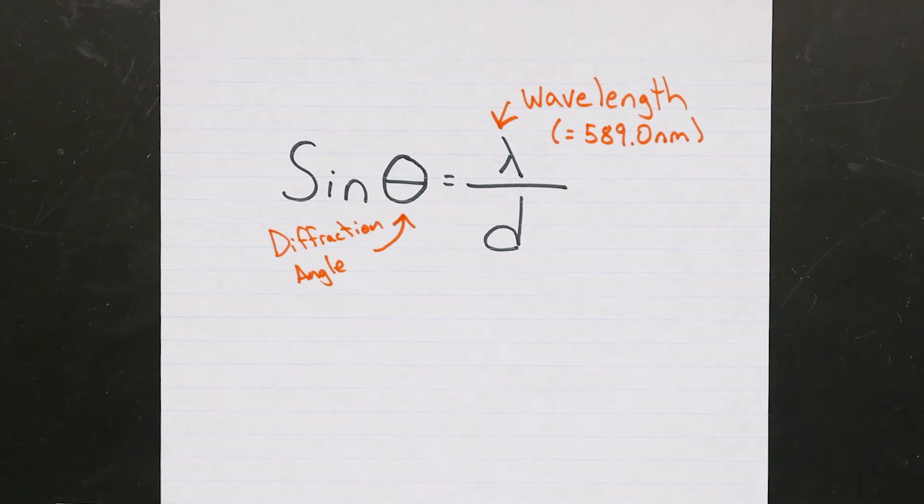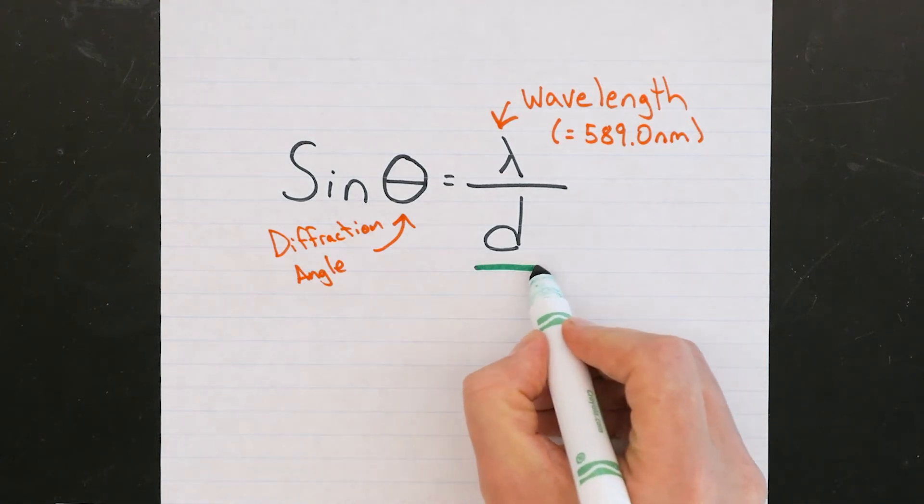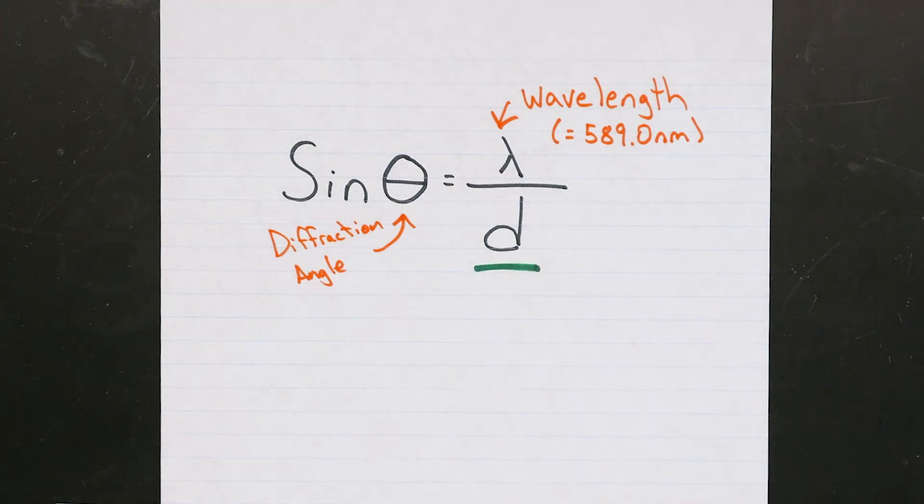You just measure the diffraction angle, and since you know that lambda has to equal 589 nanometers for this case, you can use this equation to figure out what your d value is, and you're ready to proceed.